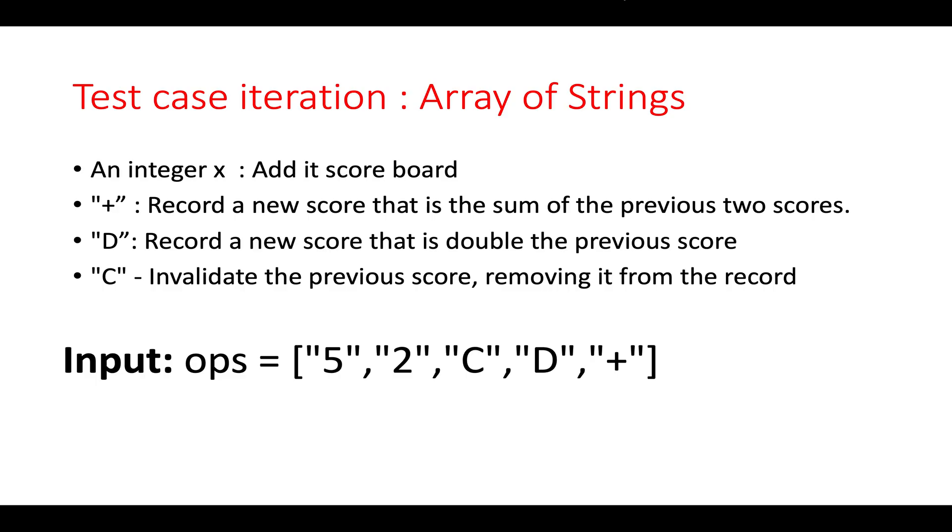Now let's shoot for understanding the question and walking through a test case. While creating the scoreboard, we are given a certain set of rules and the rules are as follows. You will be given a string that will act as an operation string and it could possibly have four values. The first one is an integer value. If you see an integer value, you record it to the scoreboard.